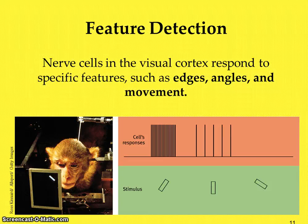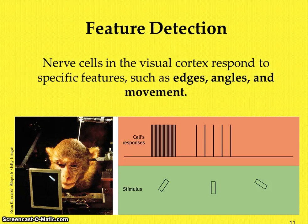One theory of vision is that our visual cortex and occipital lobe actually have different feature detector neurons that help us figure out the edges, angles, and movement of objects we're looking at. When different neurons are activated, we process that image's edges, angles, and movement. So if something is coming at you very quickly, one type of neuron in the visual cortex is stimulated, whereas if you're dodging around a corner to avoid banging your hip on it, other neurons would be activated.